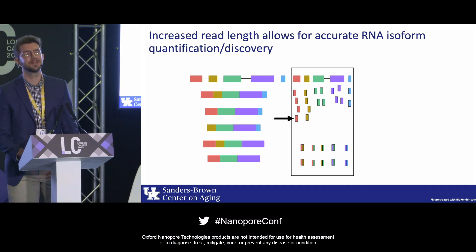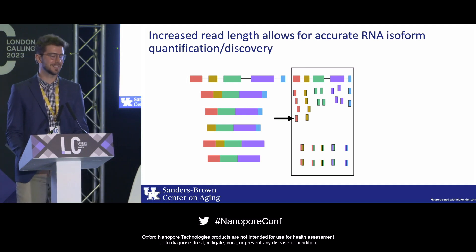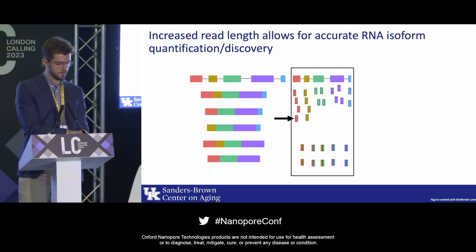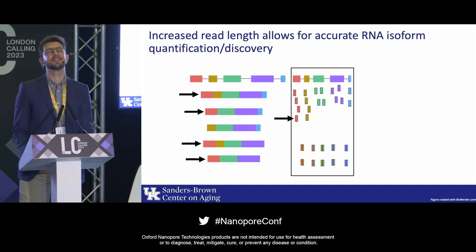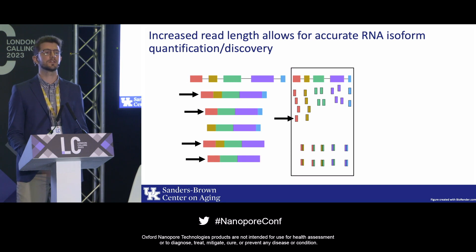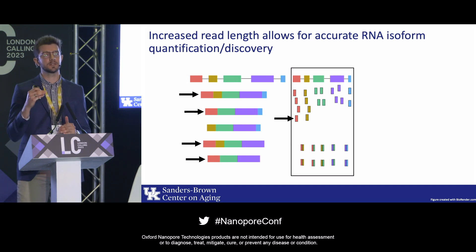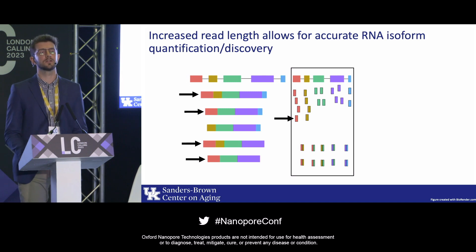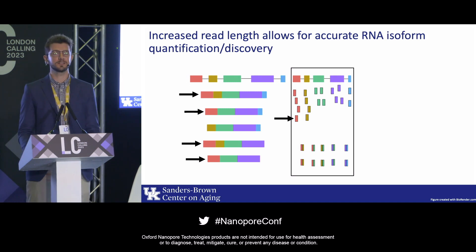For example, if you take a specific fragment, it could come from four out of the five RNA isoforms. This creates uncertainty in your measurements, and because of this, short-read sequencing traditionally collapses all isoforms into a single gene measurement, which is an oversimplification of the underlying biology.